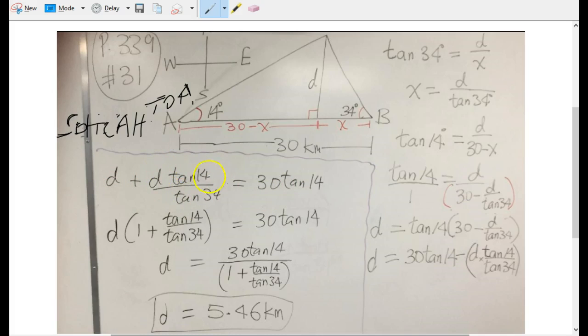That's why we have d plus d tan 14 over tan 34 on this side, and this is going to disappear on the right side. Now because both are on the same side, they are one term and another term separated by addition. We can factor out the d.